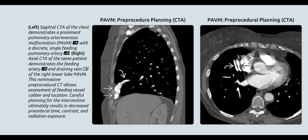Axial CTA of the chest demonstrates a prominent pulmonary arteriovenous malformation with a discrete single feeding pulmonary artery. Axial CTA of the same patient demonstrates the feeding artery and draining vein of the right lower lobe PAVM. This non-invasive procedural CT allows assessment of feeding vessel caliber and location; careful planning for the intervention ultimately results in decreased procedural time, contrast, and radiation exposure.